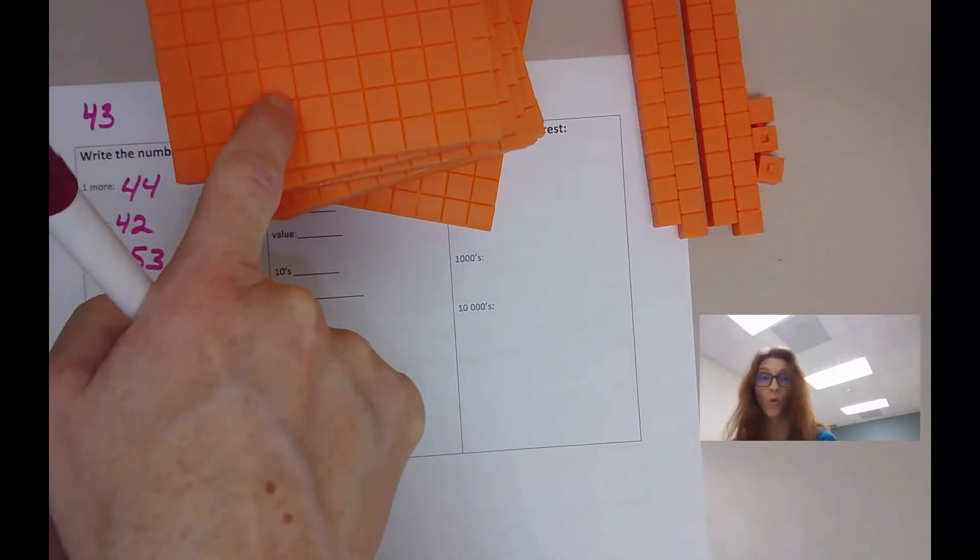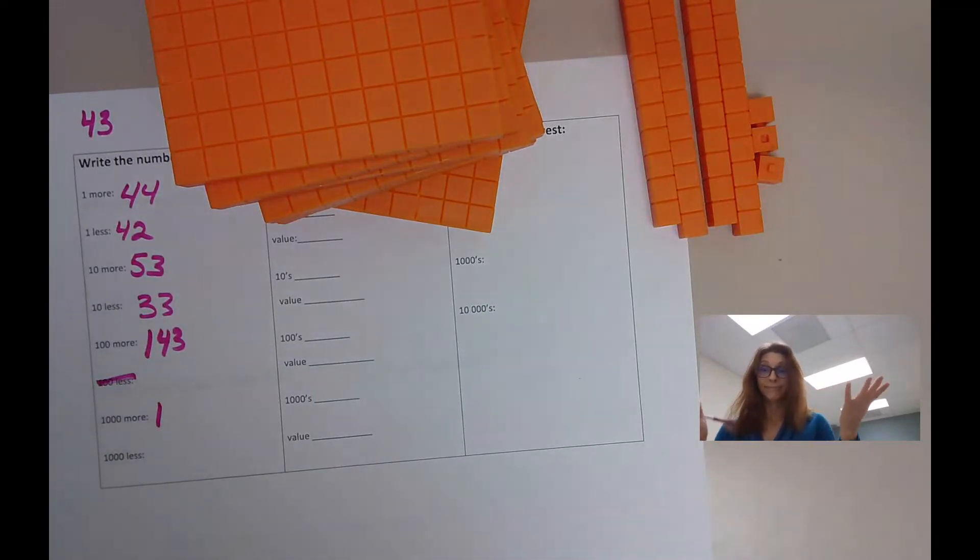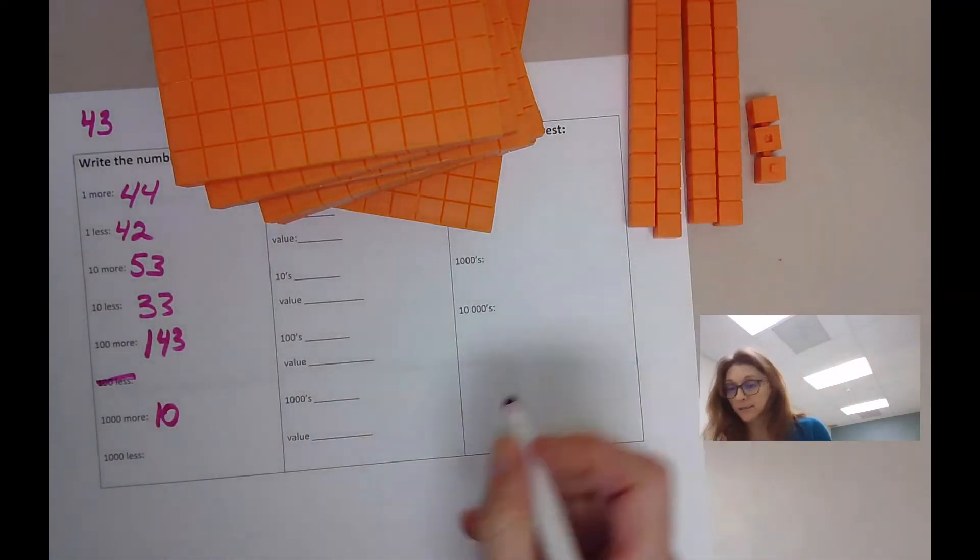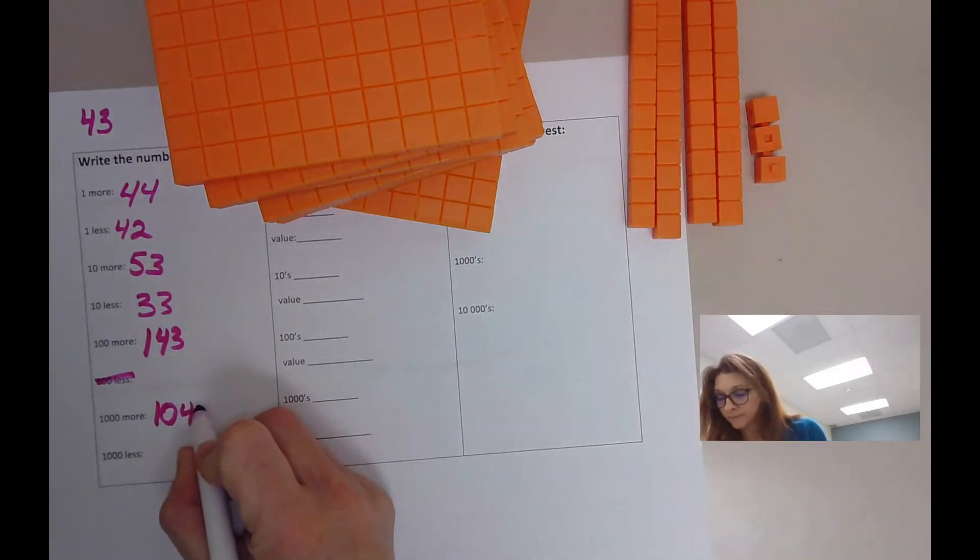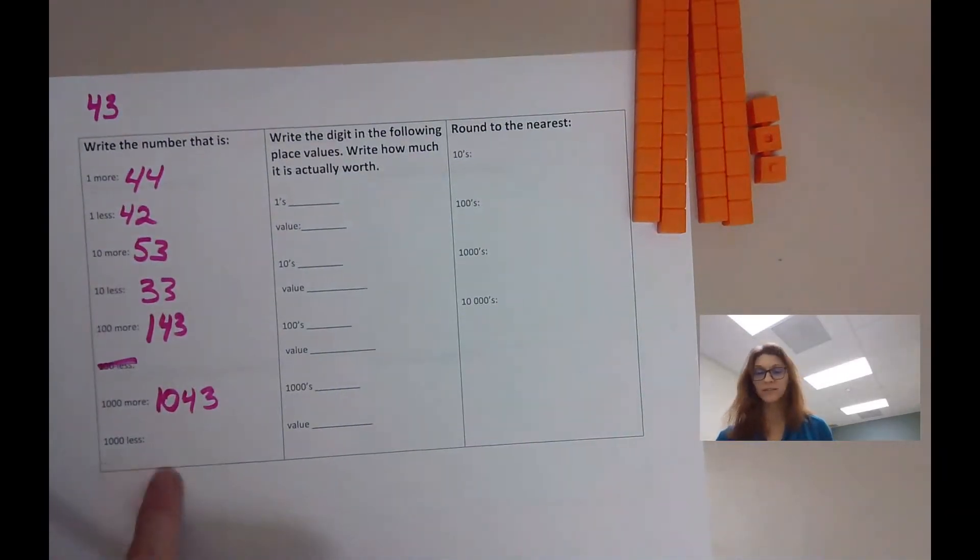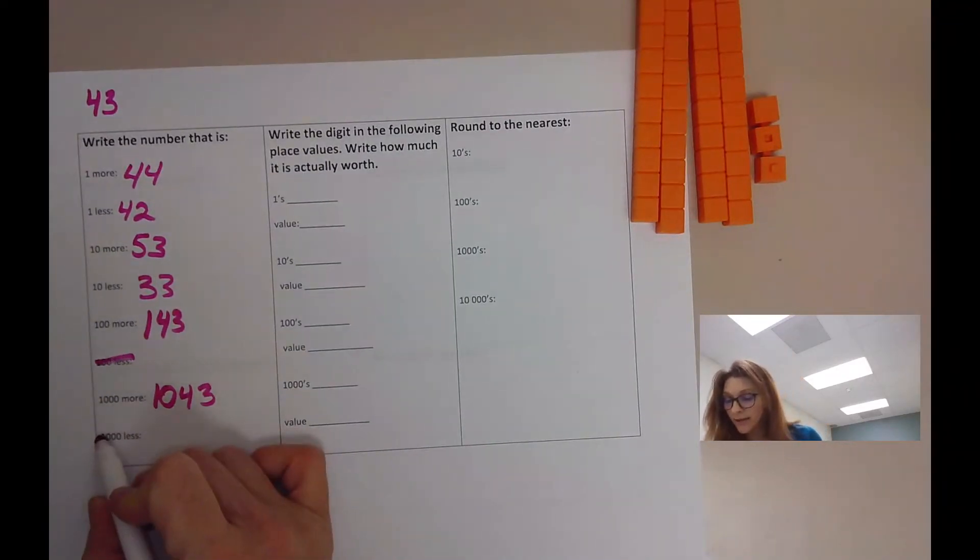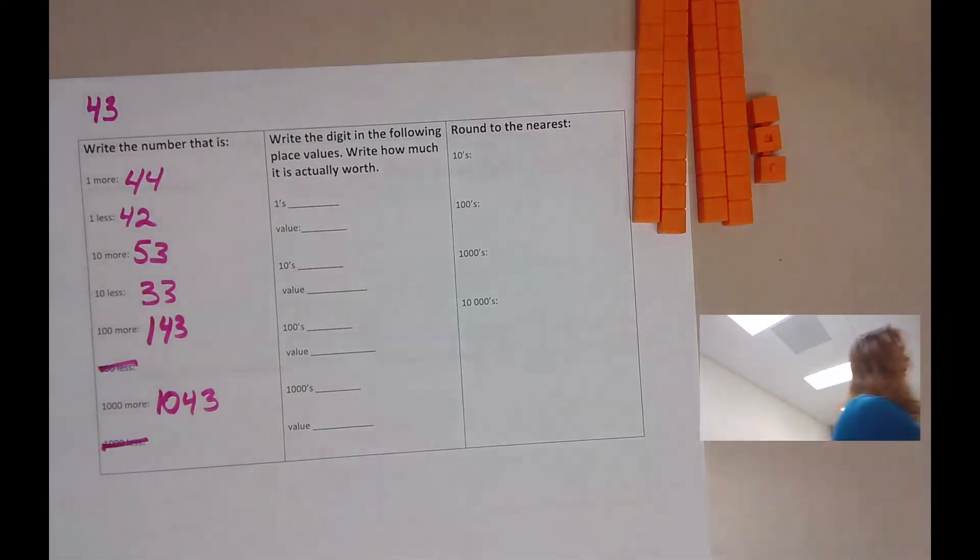How many hundreds do we have? None. There are no hundreds here in our model. So you hold that with a zero. We had four tens, 40. And we have three units, 3. Then you can convert back to your regular number. 1,000 less. I cannot take 1,000 away from my 43. So we do not have to do that one until you're in grade 5.